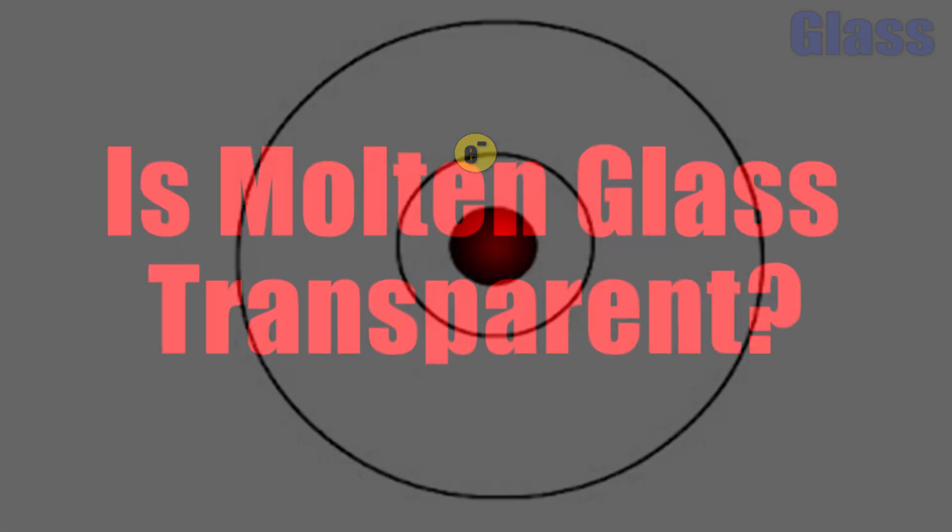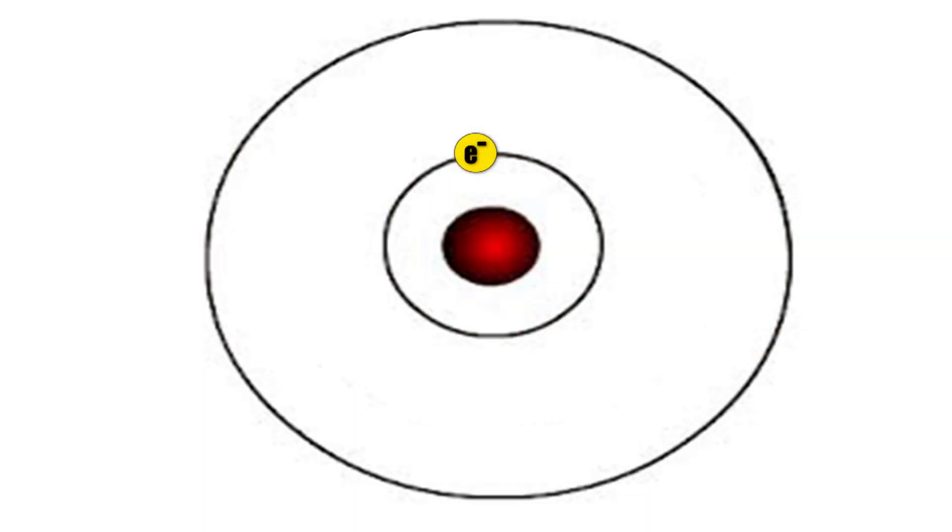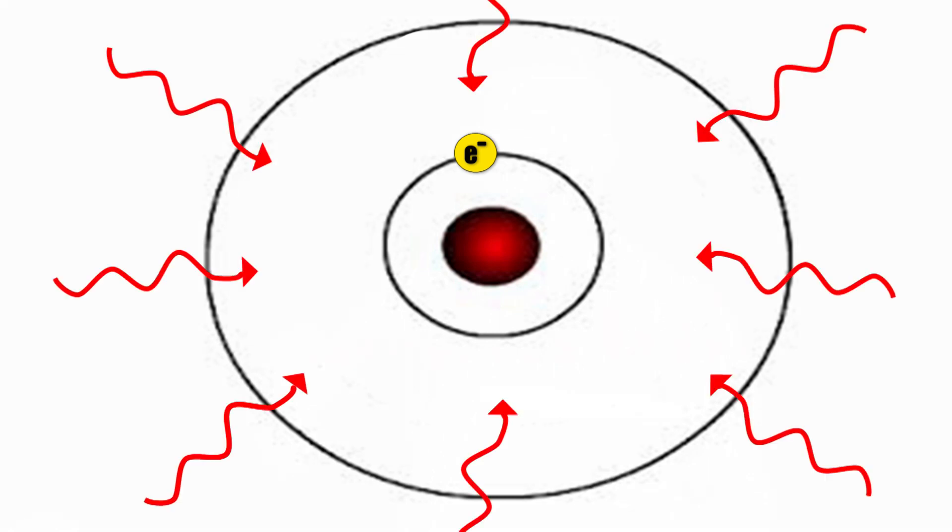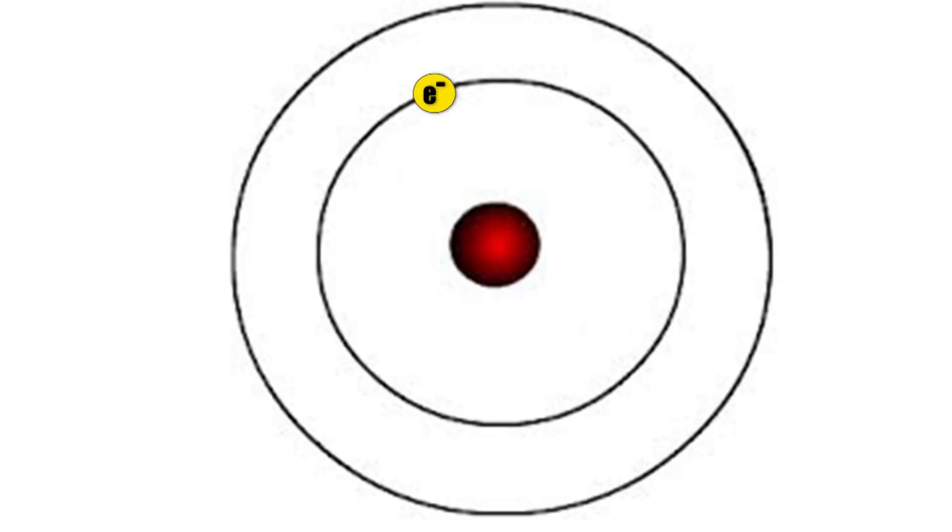Now, when I first saw this question of is molten glass transparent, my initial guess was that it's not. And my reasoning went something like this: I hypothesized that the extreme temperatures that glass is exposed to in its molten state would supply so much heat energy that it would actually raise the electron's ground state energy level, which would effectively close glass's massive energy gap. This would allow photons to raise electrons to their higher energy state, be absorbed, and cause glass to be opaque.